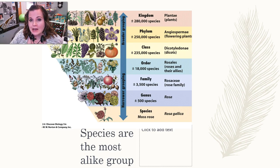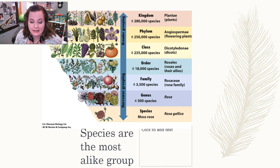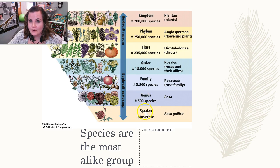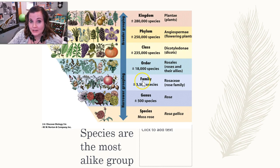So what is a species and how do more species develop over time? The first thing we need to talk about is identifying what a species actually is. Remember that when we look at the classification of living things, species is going to be the one at the bottom, the most specific of all the different classifications. You start off with kingdom — in this case plants — phylum, flowering plants, these are angiosperms, class dicotyledons, order roses, the rosalia, roses and their allies, family rosaceae, and genus rosa species — the moss rose, rosa gallica. That's the most specific classification.